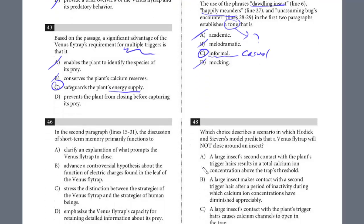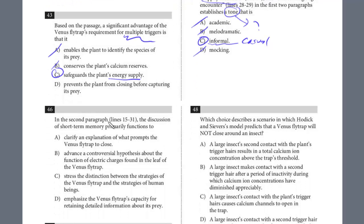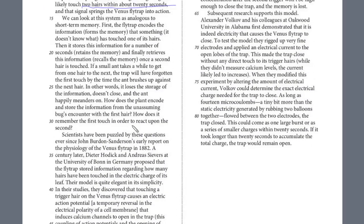Let's do number 46. In the second paragraph, lines 15 to 31, the discussion of short-term memory primarily functions to what? This is a function question. What's the function of lines 15 to 31? So let's take a look at that paragraph and try to predict the function before we look at the choices. This is after the first paragraph that explained how it needs those two triggers, those two touches within about 20 seconds that signals the Venus flytrap into action. So here's the beginning of the second paragraph. We can look at this system as analogous to short-term memory. First, the flytrap encodes the information. It forms the memory that something has touched one of its hairs, and it stores this information for a number of seconds, retains the memory, and finally retrieves its information, recalls the memory once a second hair is touched.